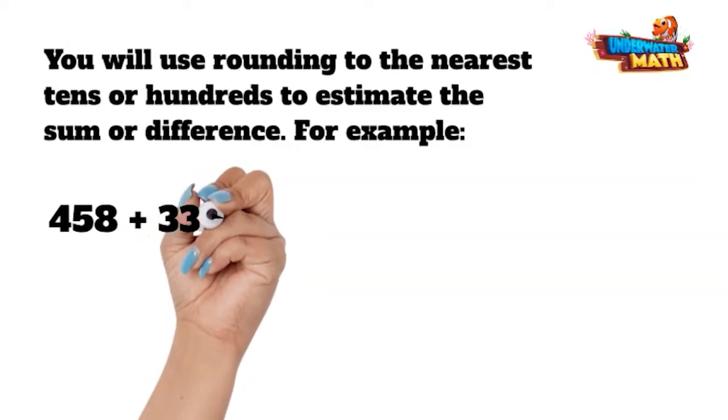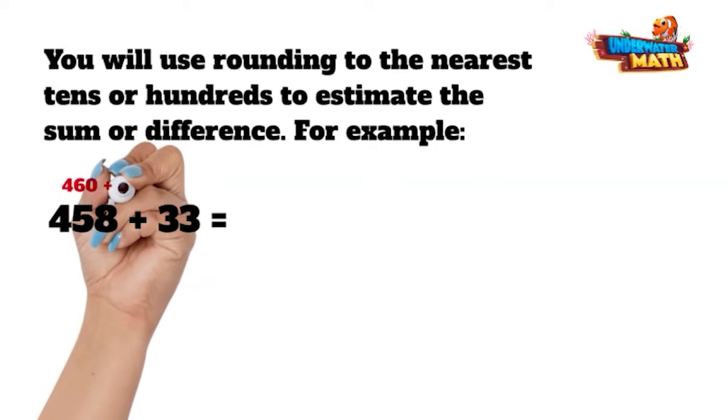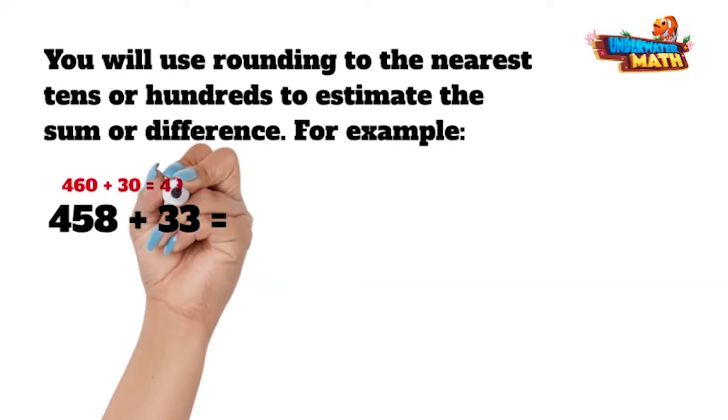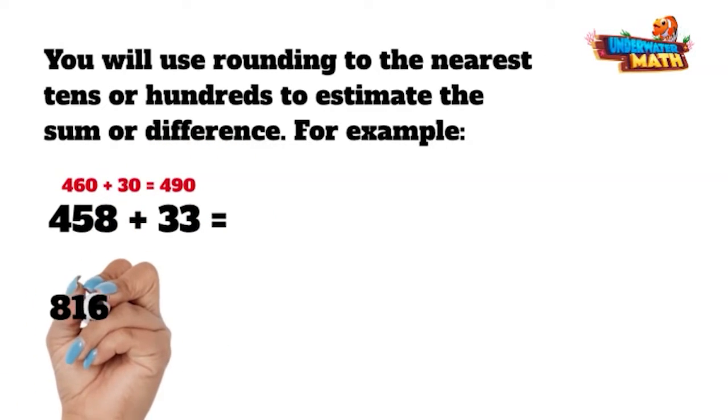For example, 458 plus 33. You want to round 458 up to 460 and round 33 down to 30. You can easily use mental math to add 460 plus 30 is equal to 490.